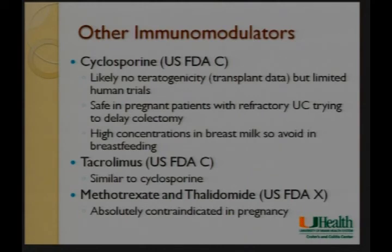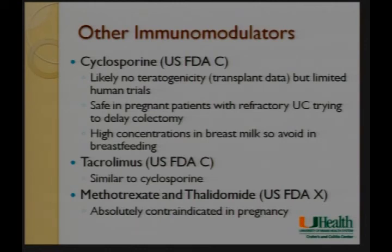Cyclosporine is not used frequently as an outpatient drug but is used as an inpatient drug for active colitis. It likely has no teratogenicity based on transplant data, but we have very few clinical trials in IBD. It is safe in pregnant patients trying to delay colectomy in acute severe colitis, but avoid breastfeeding. Tacrolimus is also a calcineurin inhibitor, class C, with similar characteristics. Methotrexate and thalidomide are absolutely contraindicated — methotrexate is a category X causing very dangerous teratogenic side effects. If a woman wants to get pregnant, hold methotrexate for at least three months, preferably closer to six months before trying to conceive.